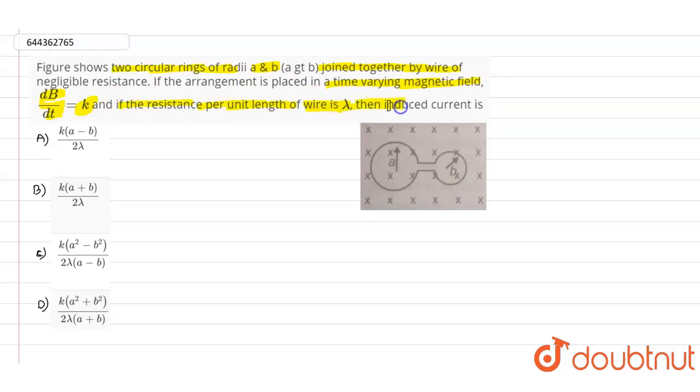then the induced current is what we need to find. In this question there are two circular rings of radius a and b. The smaller circular radius is